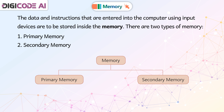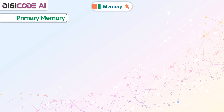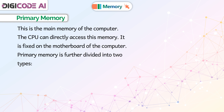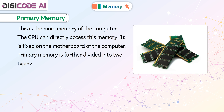Primary memory and secondary memory. Primary memory is the main memory of the computer. The CPU can directly access this memory. It is fixed on the motherboard of the computer.